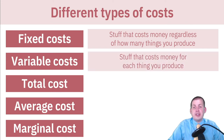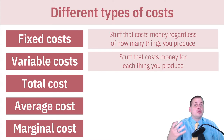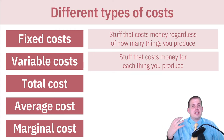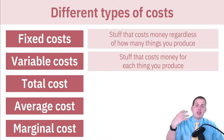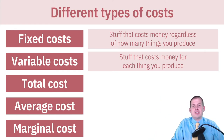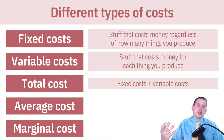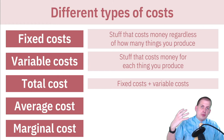You also have variable costs, which are things that cost money depending on how many things you make. If you're producing spoons, you have to buy the metal that goes into them. The more spoons you make, the more metal you buy, the more employees you have to pay, the more benefits you cover, and the more managers you have to hire. These are variable costs — costs that go up and down depending on how much stuff you're making. The total cost is simply the sum of fixed costs and variable costs.